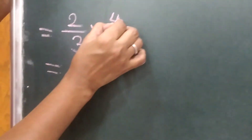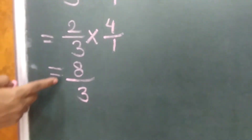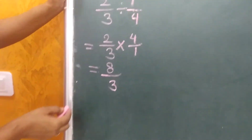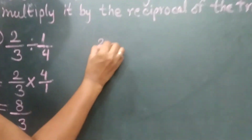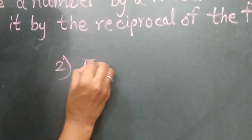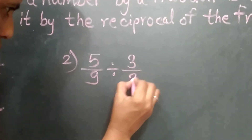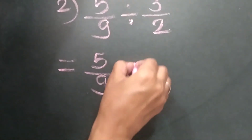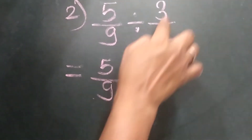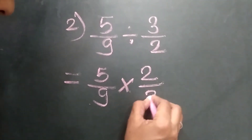What we get: 2 times 4 is 8, and 3 times 1 is 3. So the answer is 8 upon 3. Let's see one more example: 5 upon 9 divided by 3 upon 2. We will take the first fraction as it is — 5 upon 9 — and in place of divide, we convert it into multiplication and take the reciprocal.